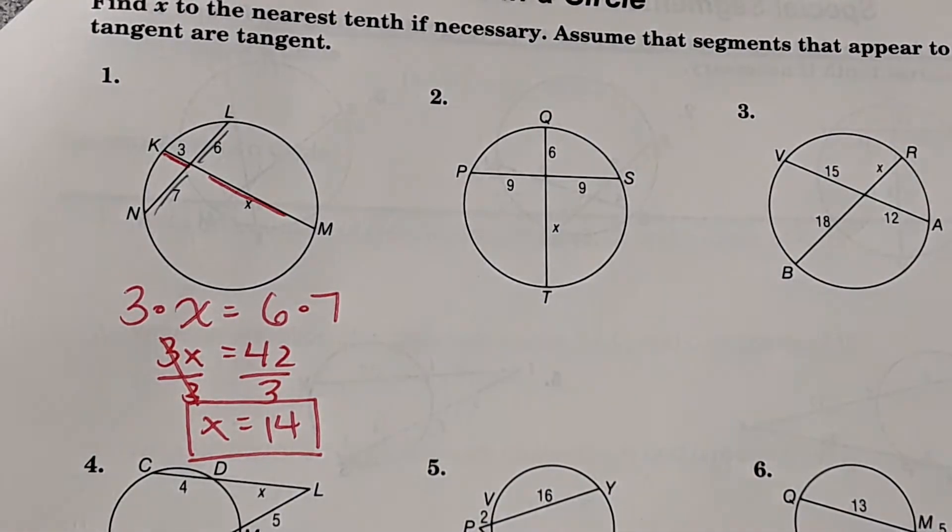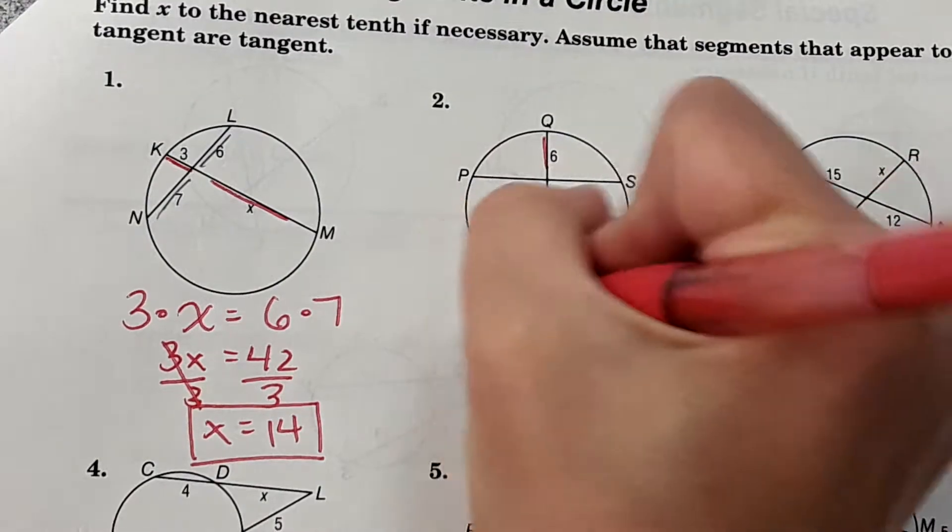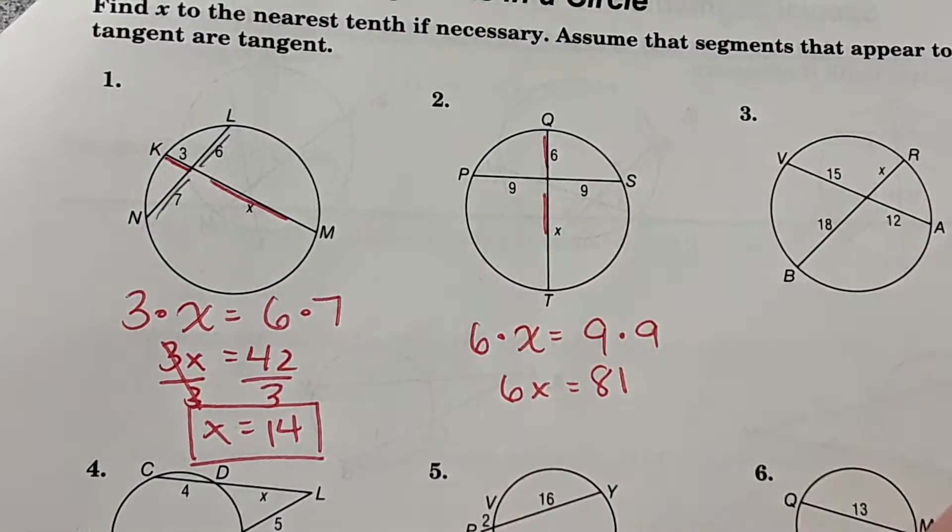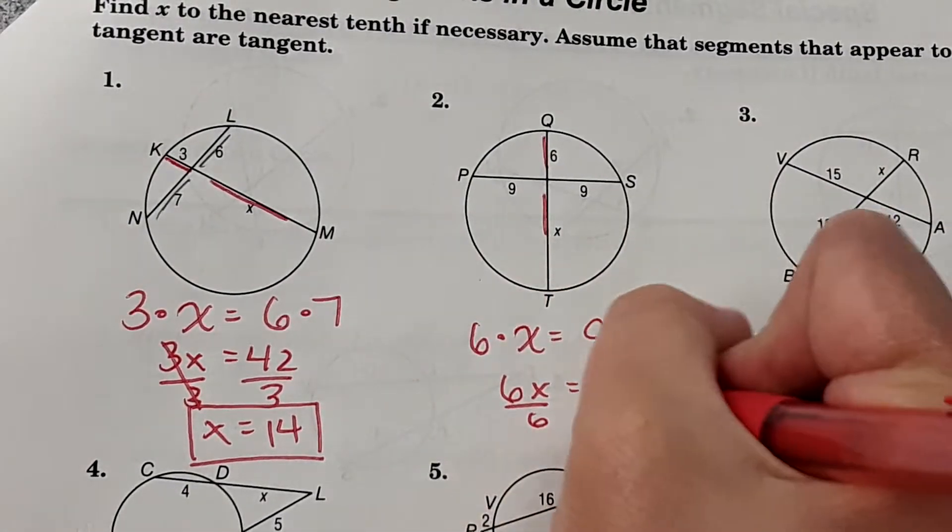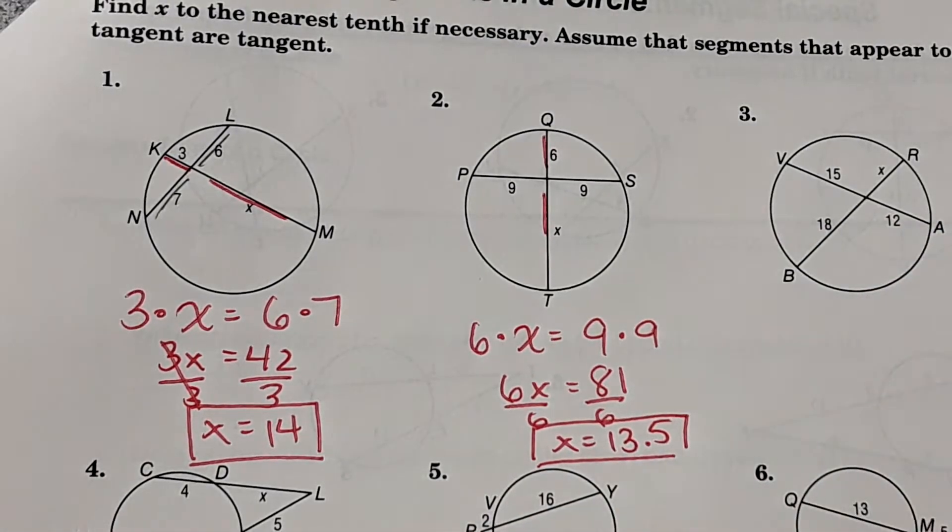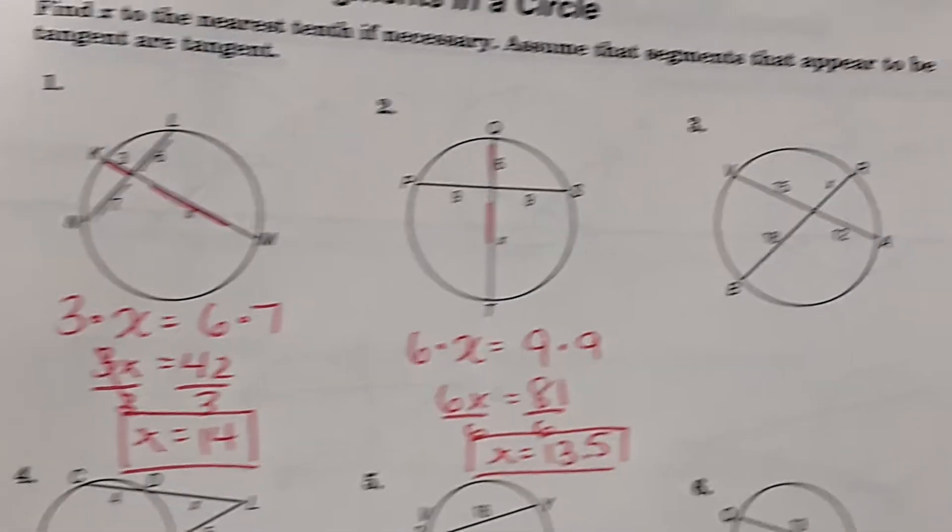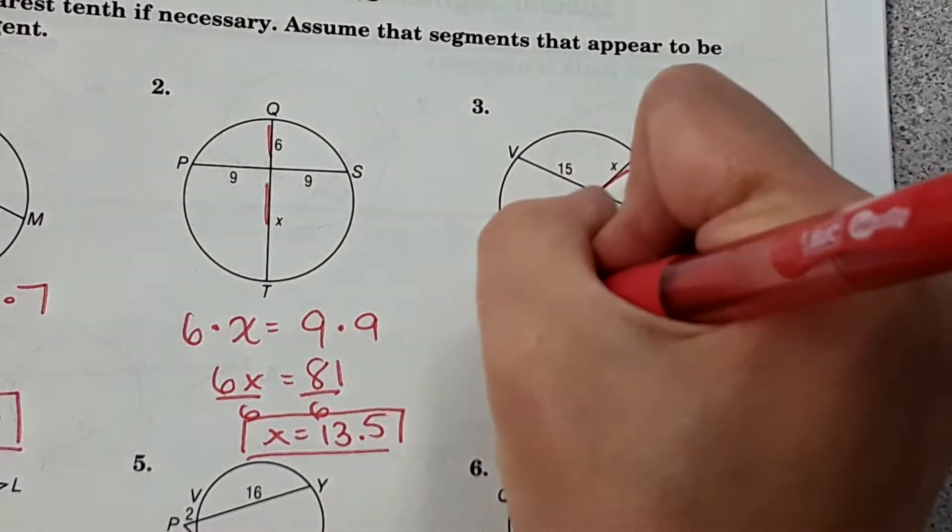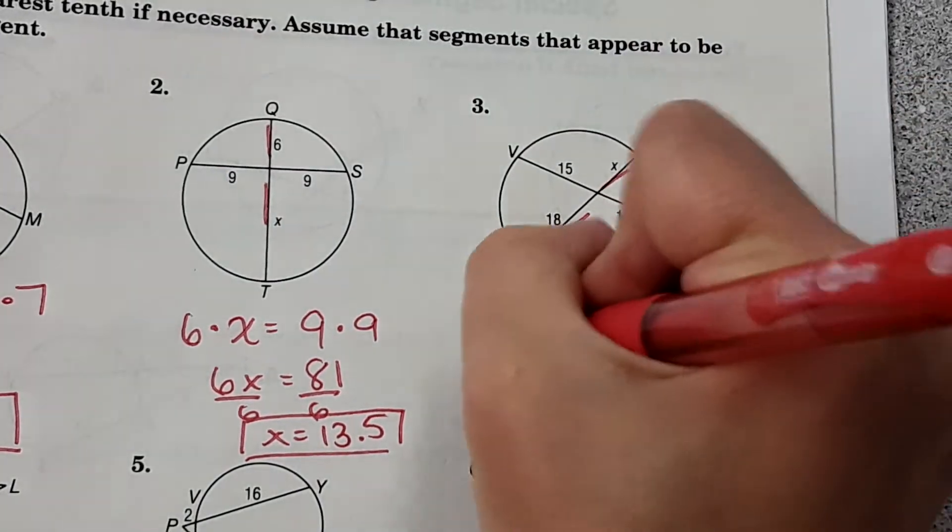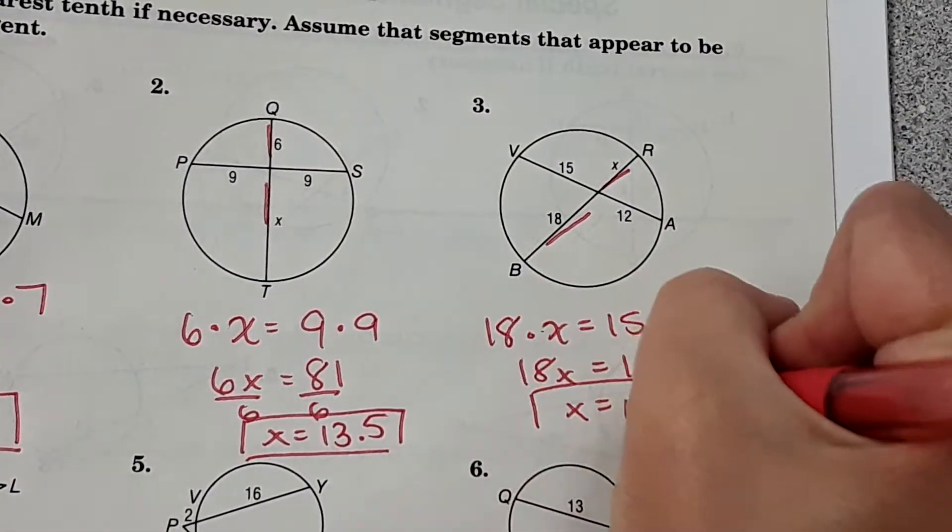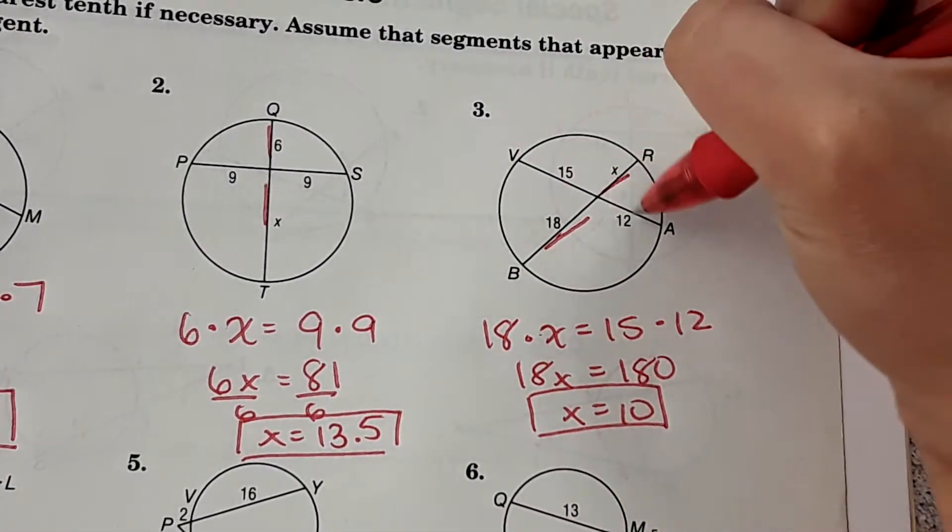We're going to repeat this for the next few problems. It's going to be 6 times X. It's 18 times X and then 15 times 12.